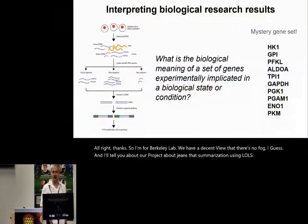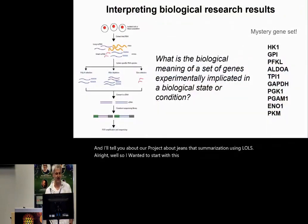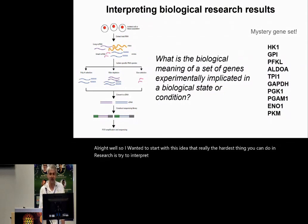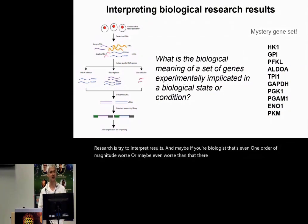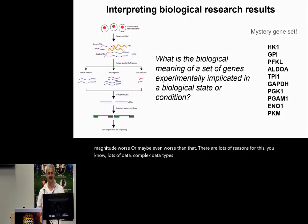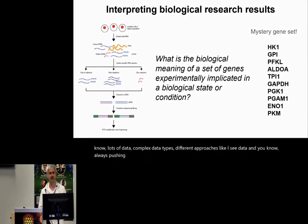I wanted to start with this idea that really the hardest thing you can do in research is try to interpret results. And maybe if you're a biologist, that's even one order of magnitude worse. There are lots of reasons for this: lots of data, complex data types, different approaches, legacy data, and we're always pushing the envelope. We have a lot of knowledge we have to collect and standardize, so just at that edge still.